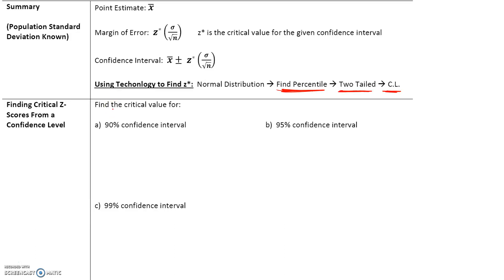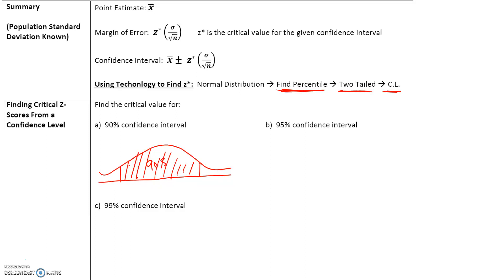Let's find the critical value for a 90% confidence interval. If the middle area is 90%, that leaves 10% total — split into two tails, so 5% in each tail. We use the normal distribution calculator, go to find percentile, select two-tail, and enter 5% for the left tail.